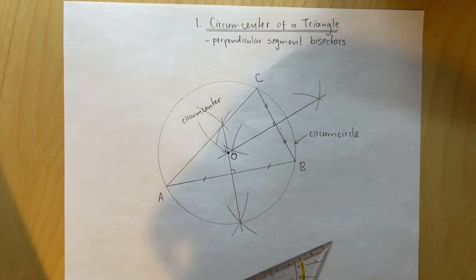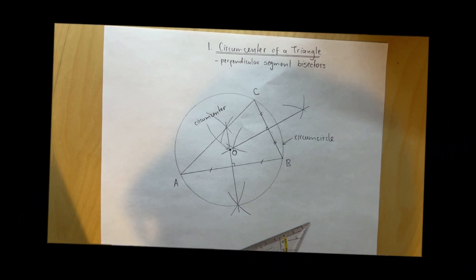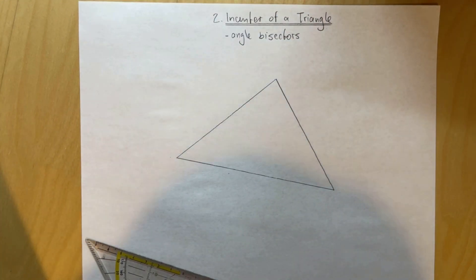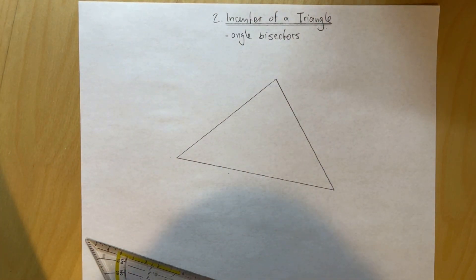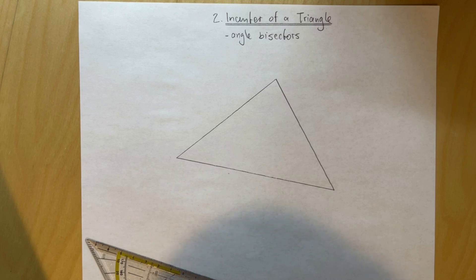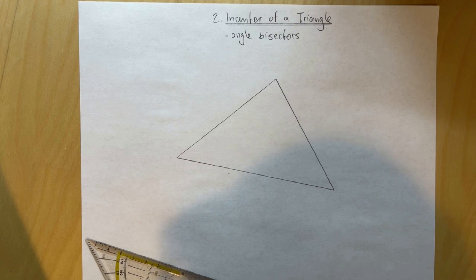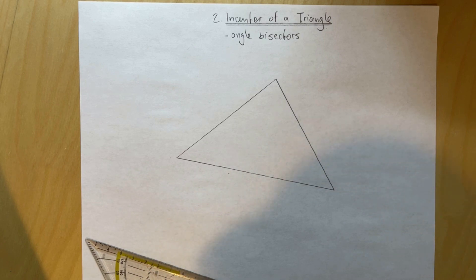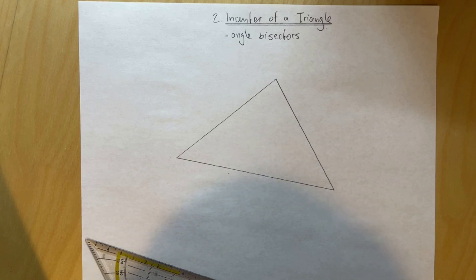That was the first construction. Now let's look at the second construction: the incenter of the triangle. Our second construction involves the incenter of the triangle. The incenter is basically the center of the circle for which we can inscribe a circle inside the triangle. The key here is to construct the angle bisectors. You only need two of the angle bisectors instead of all three, because two lines intersect at one point.